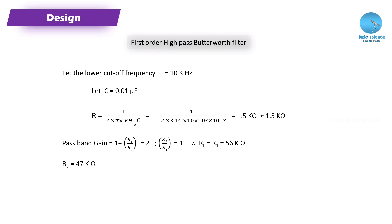There is a fixed value. If we construct a high pass filter with fL = 10 kHz, the fL will be 10 kHz. If you want to change to 20 kHz, we can change the component values. The capacitor C value is 0.01 µF. R equals 1 divided by 2π times fL times C, which gives approximately 1.5 kΩ.